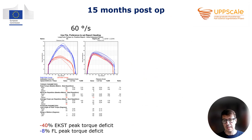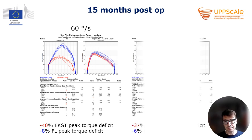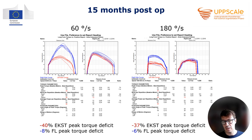The next time we saw her was 15 months post-surgery. In between she had completed intensive rehabilitation treatment at the spa. We measured her again — there was still substantial deficit in the extensor muscles, but rather normal activity of the flexors. The curves were very nice for the flexors but still clearly lower for the extensors. At medium speed — 180 degrees per second — there was still a 37% deficit of extensor peak torque, and a 6% deficit of flexor peak torque.